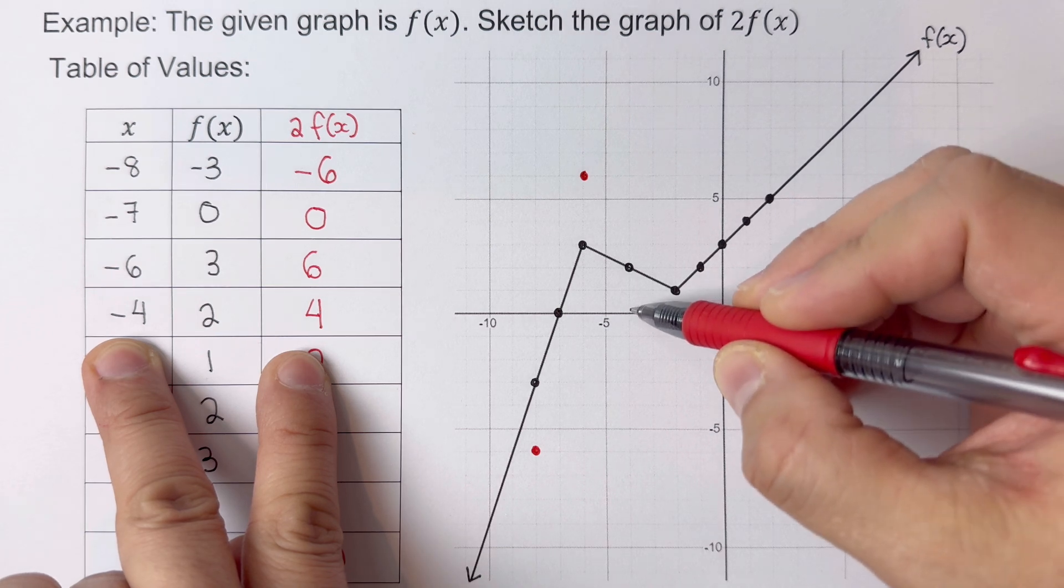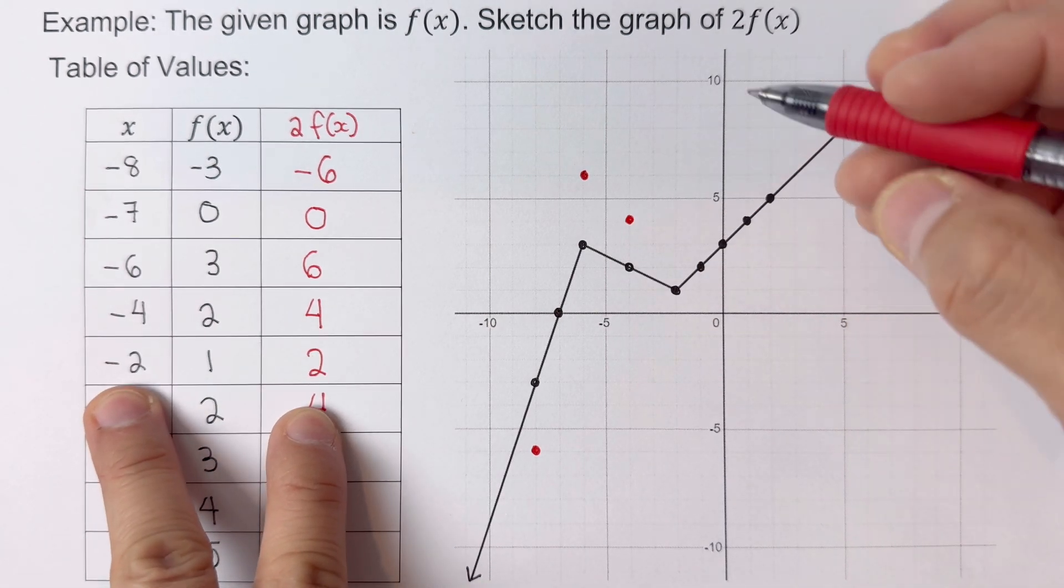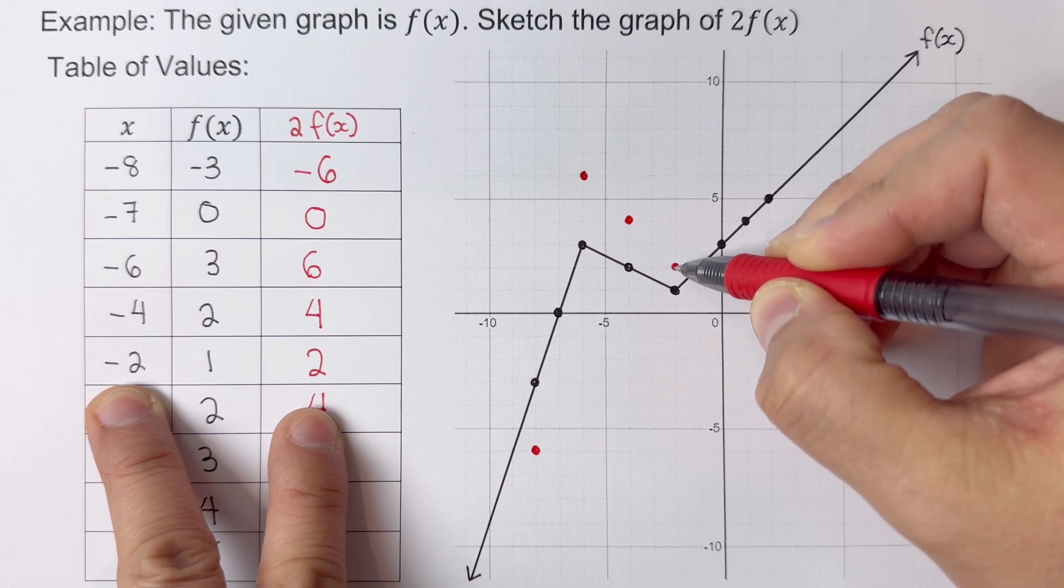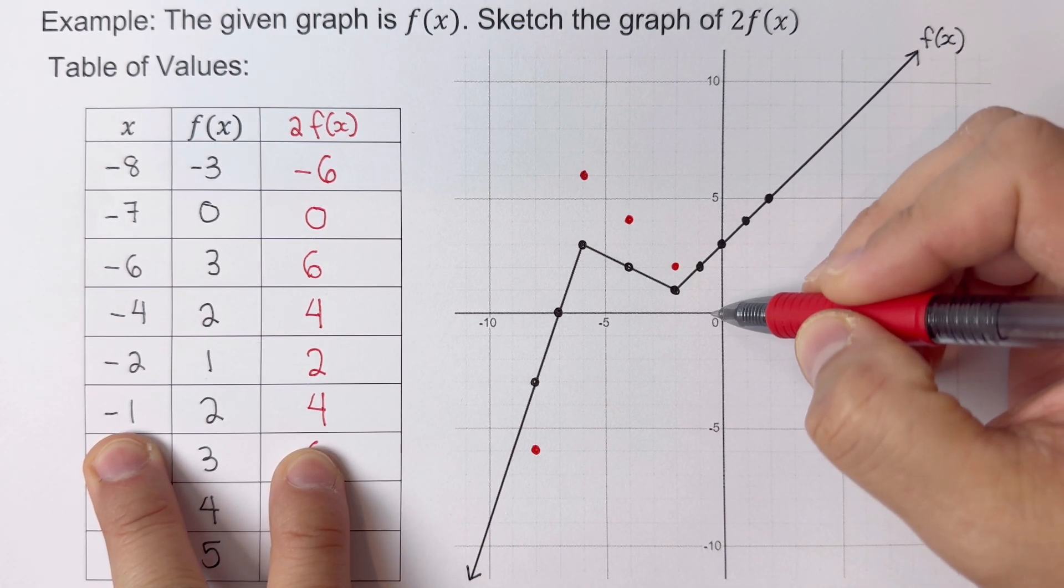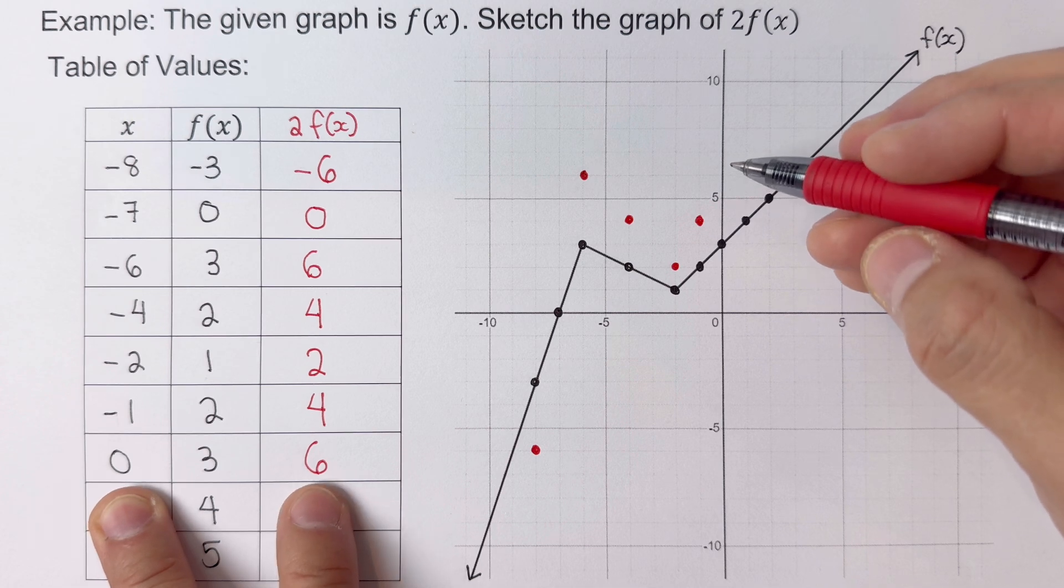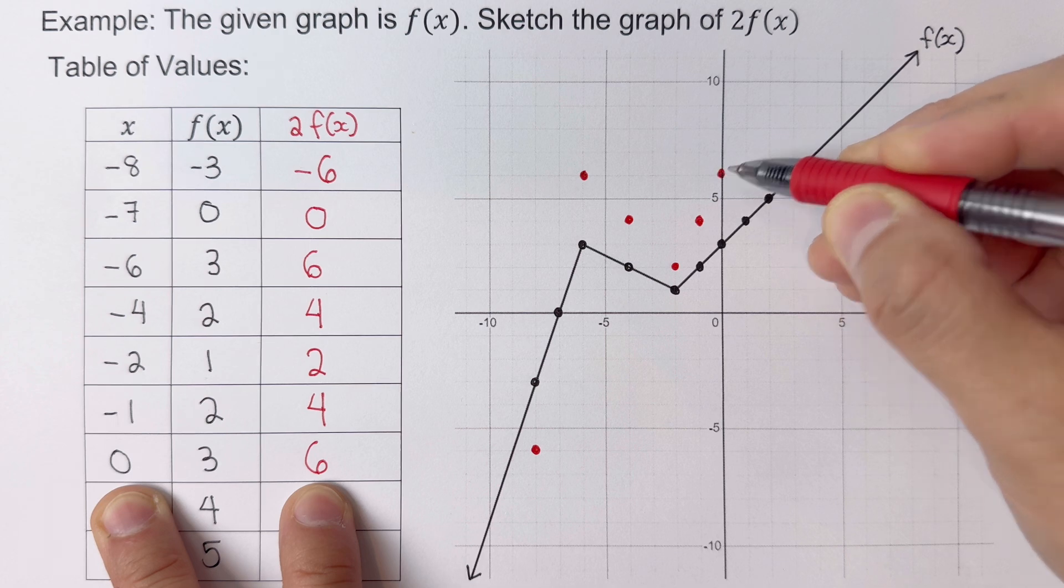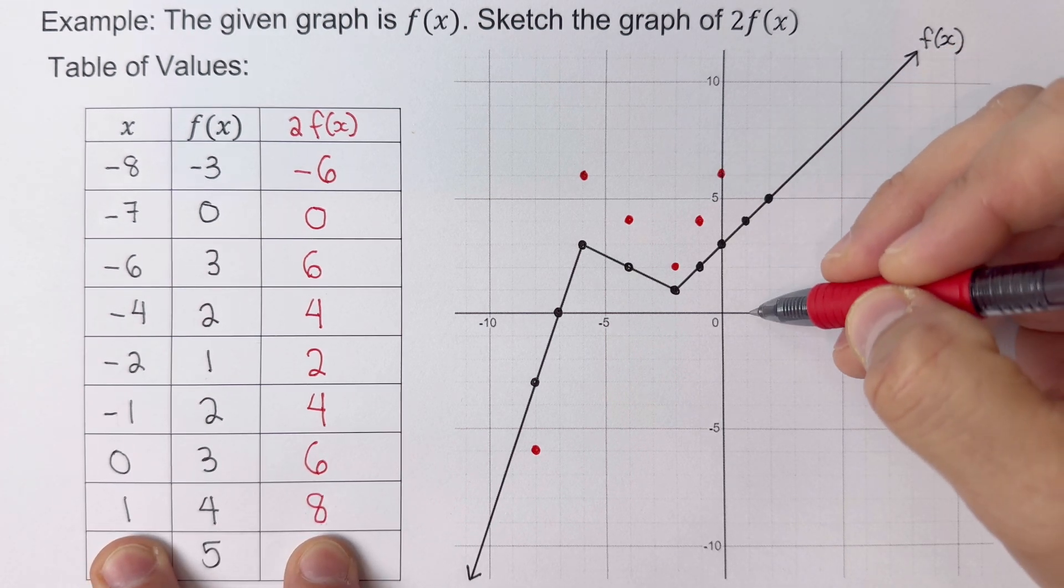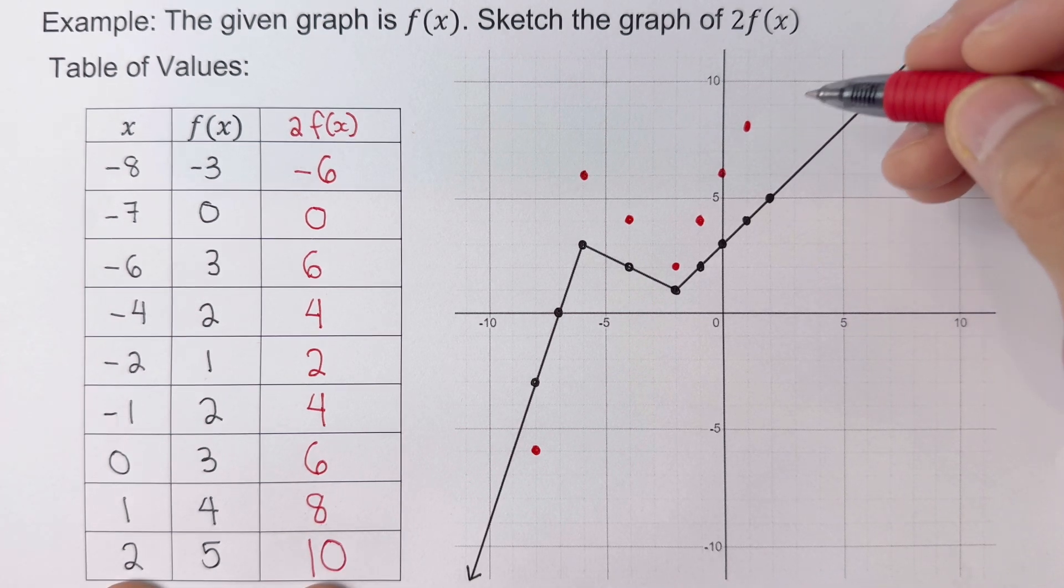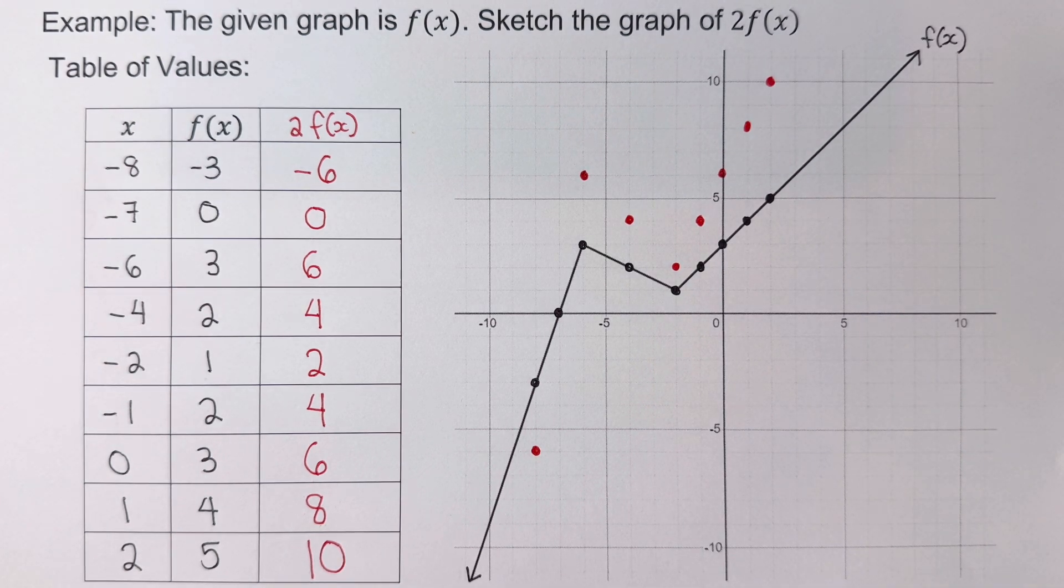Then we have negative 1 and 4, then 0 and 6, then 1 goes to 8, and the last one is 2 goes to 10. Now we will connect the dots together.